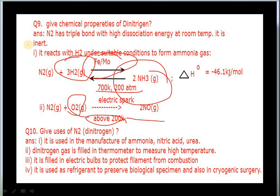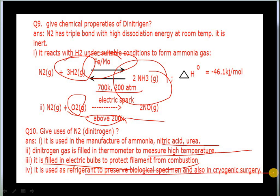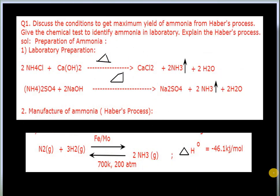Uses of dinitrogen: it is used in the manufacture of ammonia, nitric acid, and urea. Dinitrogen gas is filled in high-temperature thermometers instead of mercury. It is filled in electric bulbs to protect the filament from combustion. Dinitrogen is also used to preserve biological specimens in surgeries and for refrigeration purposes.